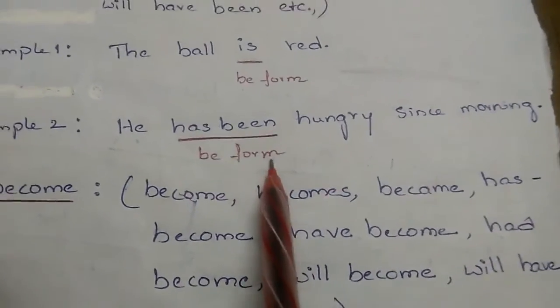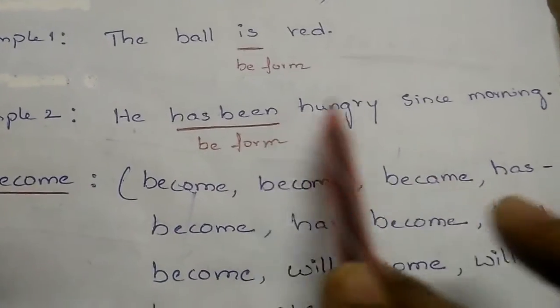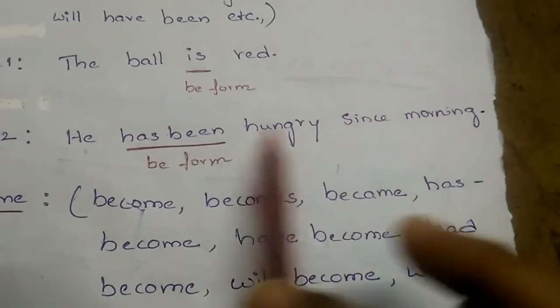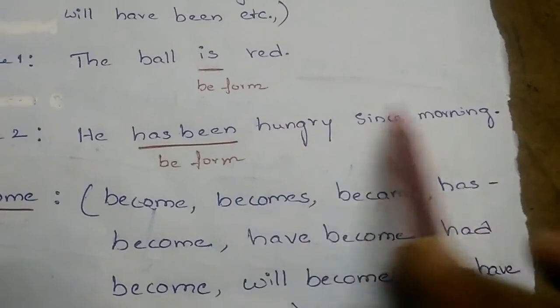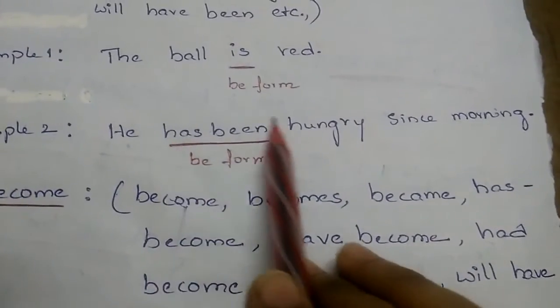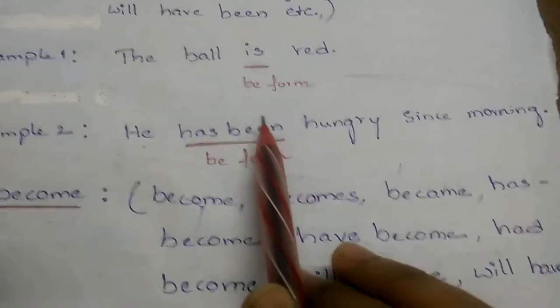It is acting as a main verb in this sentence because we don't find any other verb, any other main verb. Has been is the only main verb which is used in this sentence, and it is acting as a linking verb.